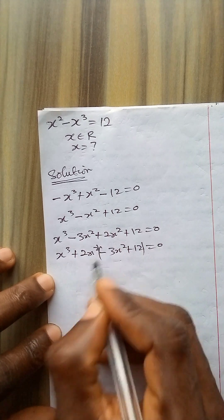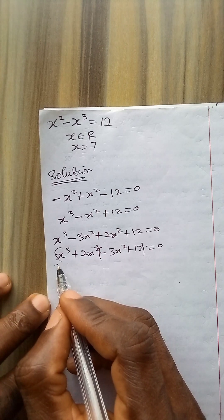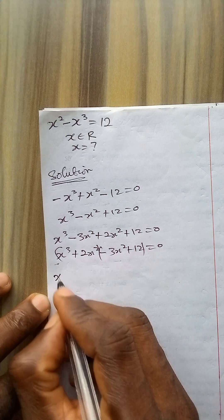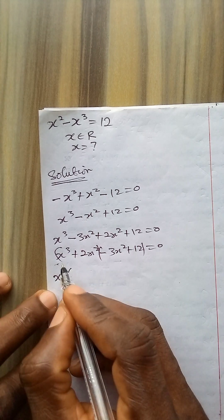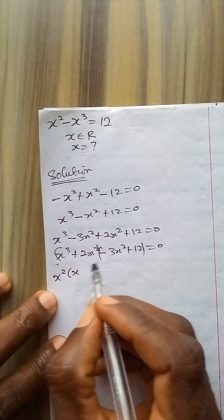Now let me group them. If I group them in this first bracket, x squared is common. So I will bring out x squared. Now if I divide x to power 3 by x to power 2, I will have x.